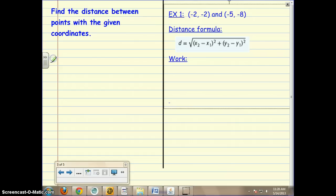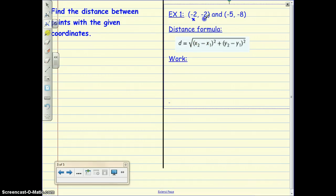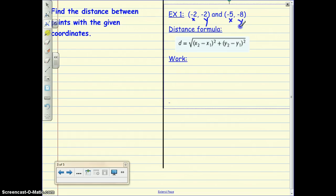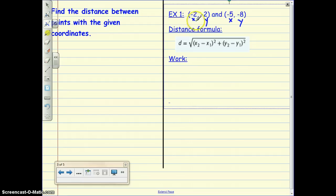So let's try using it with this first example. Our job here is to find the distance between points that are given. So these coordinates, negative 2, negative 2, and negative 5, negative 8. I like to first go in and label my points as x and y. And a lot of people like to label them as the first point and the second point so that they can use this formula easily.